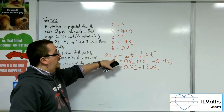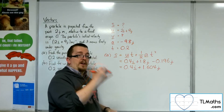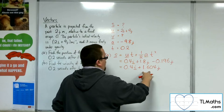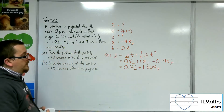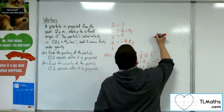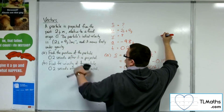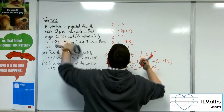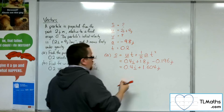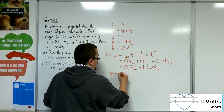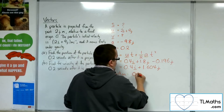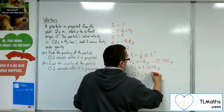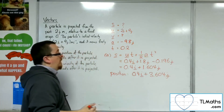That is the vector that gets us from the starting position to where the particle is after 0.2 seconds. However, although that tells us how to get from its starting position, we want to find the actual position of the particle, and it started 2j metres up. So the position will be 0.4i plus 1.604j plus 2j, which gives 0.4i plus 3.604j metres.